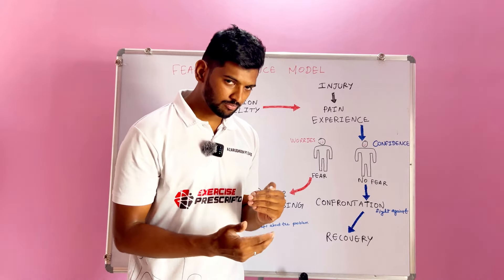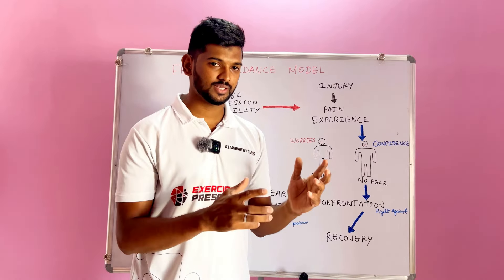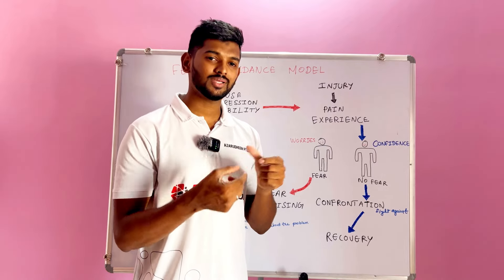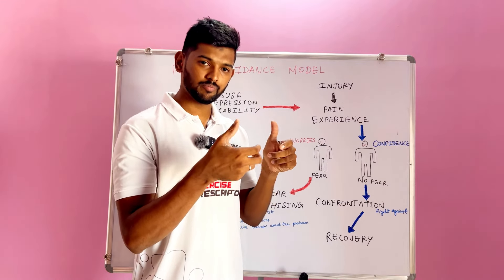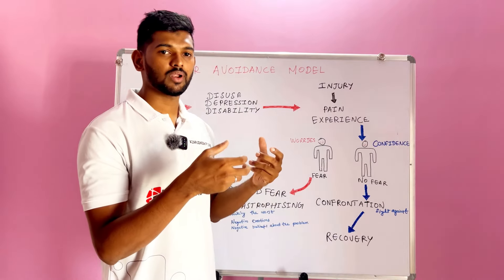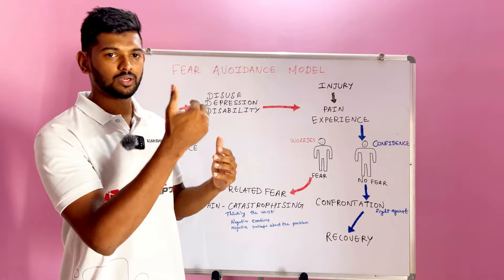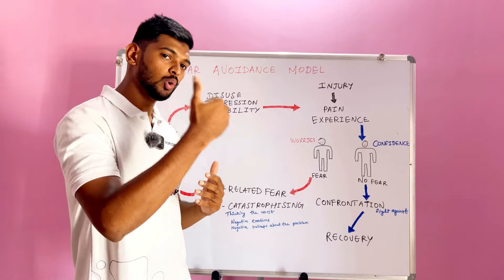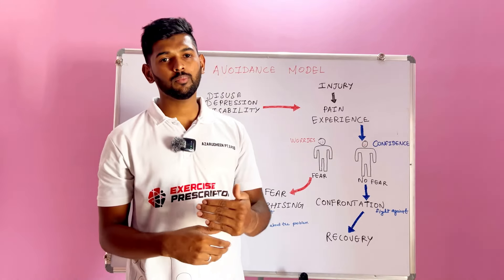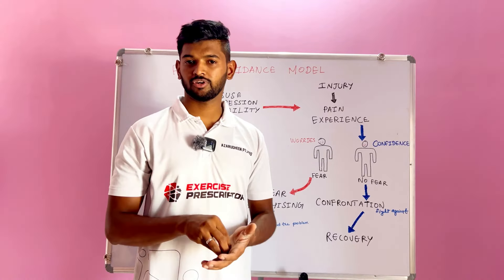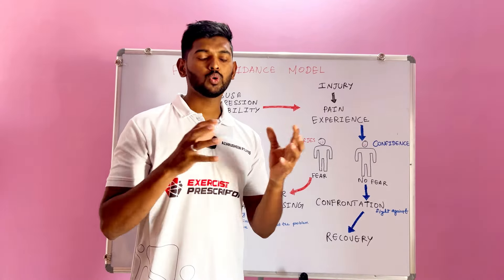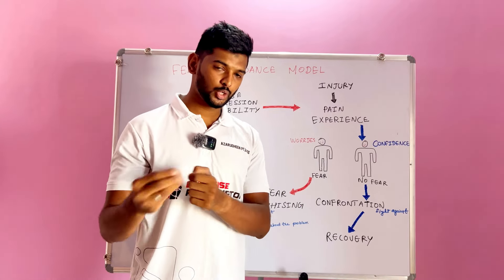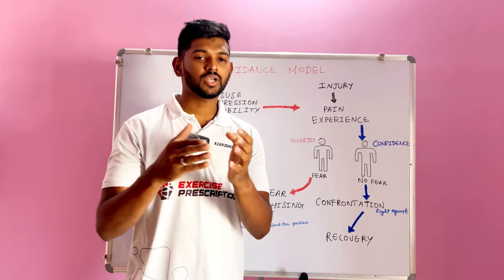How to break the cycle is very simple: you have to eliminate the fear by creating exposure towards the movement. For example, if a person has a fear of bending forward, you have to slowly increase spinal flexion — for example, pelvic tilt, cat and camel — and slowly increase flexion, inducing and making them perform that movement comfortably.